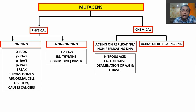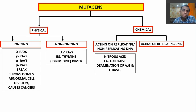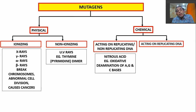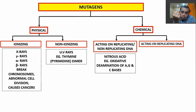For example, nitrous acid acts on both replicating and non-replicating DNA. Nitrous acid can affect the bases in the DNA, altering their properties and causing mutations.